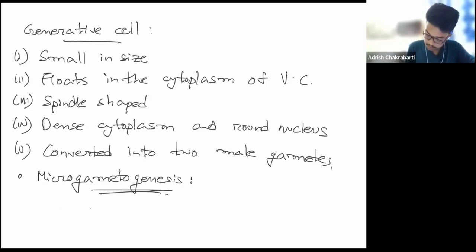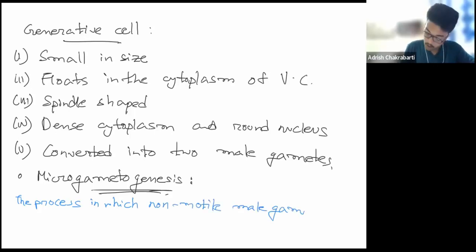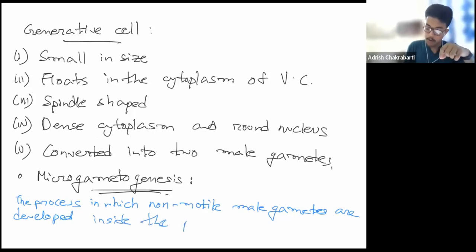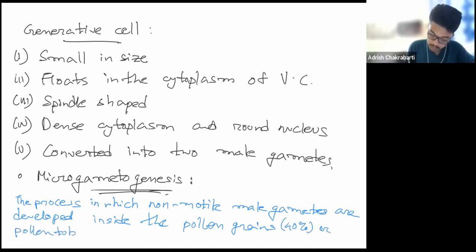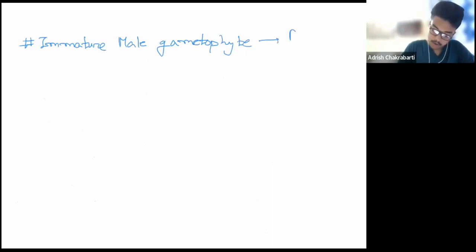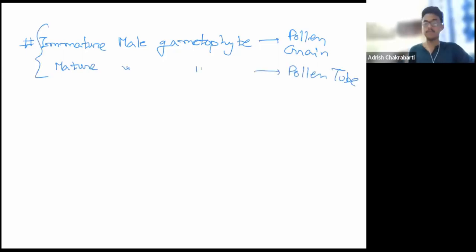Microgametogenesis is the process in which the non-motile male gametes are developed inside the pollen grain. In 40 percent of angiosperms this division occurs inside the pollen grain, and in 60 percent of cases it occurs in the pollen tube — both by mitosis. An important note: the immature male gametophyte is the pollen grain, and the mature male gametophyte is the pollen grain at the time of pollination.